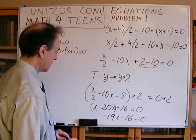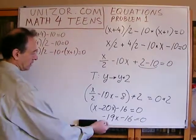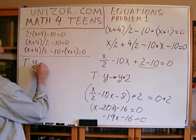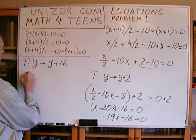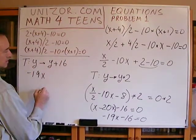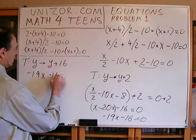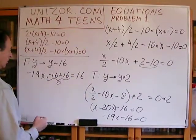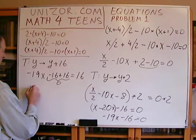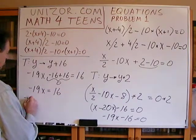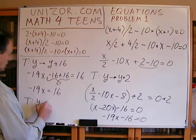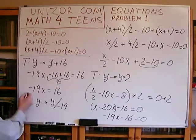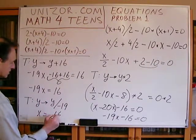I hope I didn't make any arithmetic mistakes. Using the transformation of adding 16, we convert this into minus 19x minus 16 plus 16 equals 16. That zero term cancels using the associative law, so minus 19x equals 16. Dividing by minus 19 gives x equals minus 16 over 19.